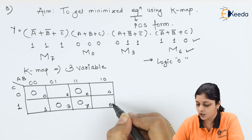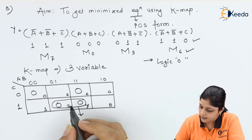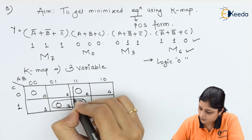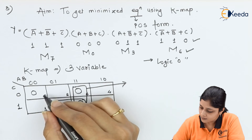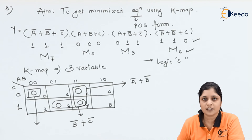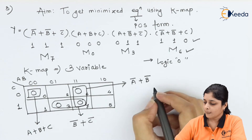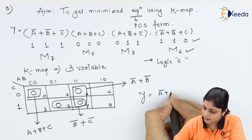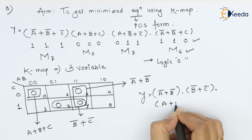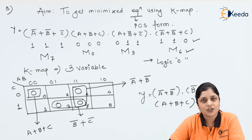8 zeros: no. 4 zeros: no. 2 zeros: yes. First group (M7 and M3): A is changing, B is the same → (B̅ + C̅). Second group (M7 and M6): C is changing → (A̅ + B̅). The remaining zero M0 is an individual group → (A + B + C). Final answer: Y = (A̅ + B̅) · (B̅ + C̅) · (A + B + C).